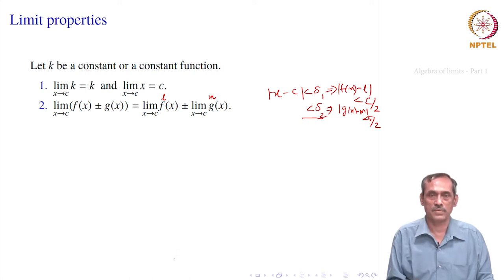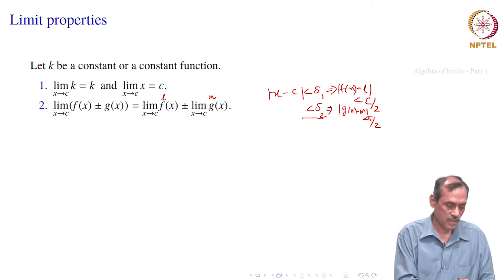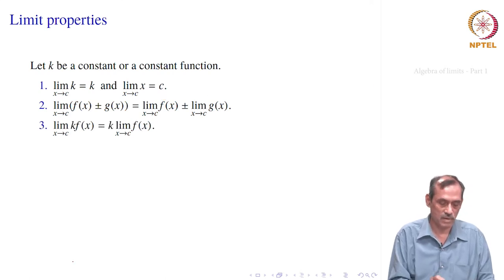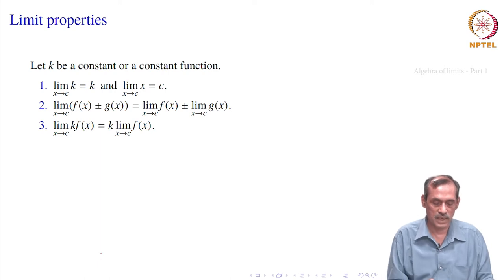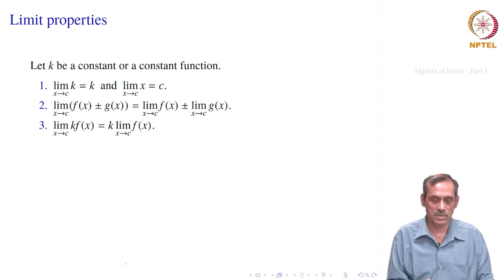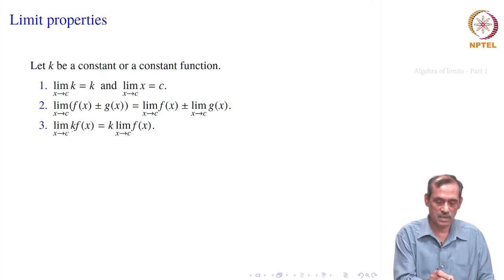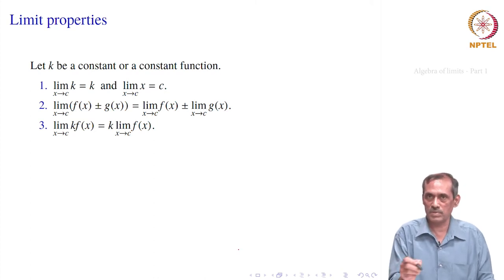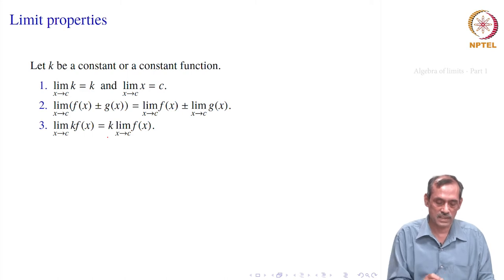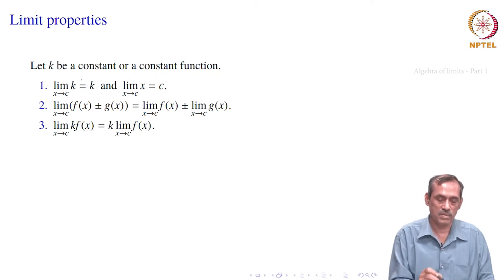Similarly, you can do this for subtraction. For multiplication by a constant k, the limit of k times f of x equals k times the limit of f of x. The proof is similar: instead of epsilon, you start with epsilon by k. If k is 0, the left side is the zero function, a constant function, which goes back to property 1, and the right side also gives 0.